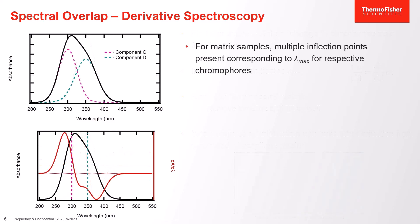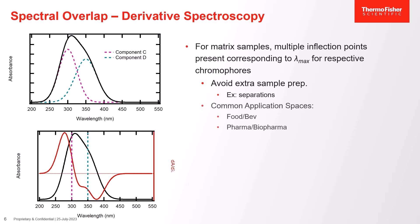For a derivative spectrum of a complex matrix, with the first derivative specifically we should expect to see multiple inflection points corresponding to the lambda max for each chromophore. As shown in this example, we see a lambda max at 300 nm and one at 350 nm respectively for the inflection points of that sample. This analysis allows us to avoid extra sample preparation such as separations, and is applied across a variety of spaces such as food and beverage, pharmaceuticals, and biopharmaceutical industries.